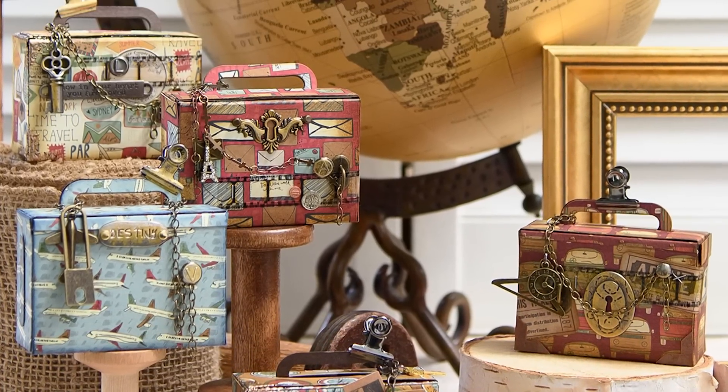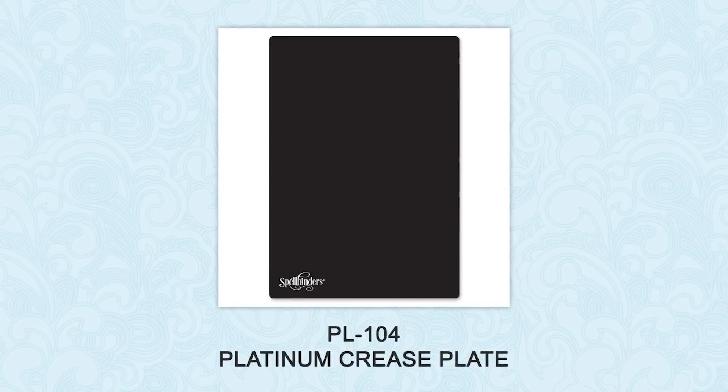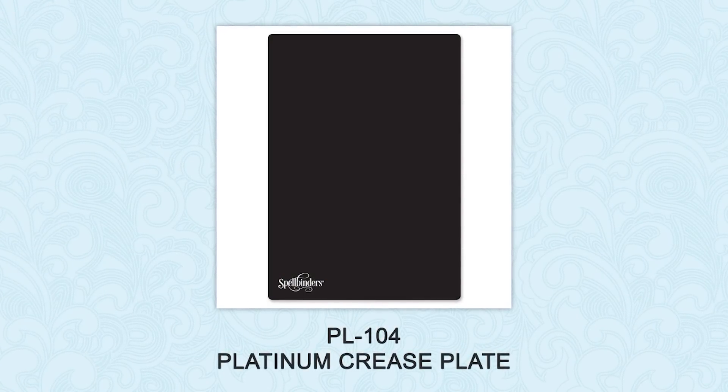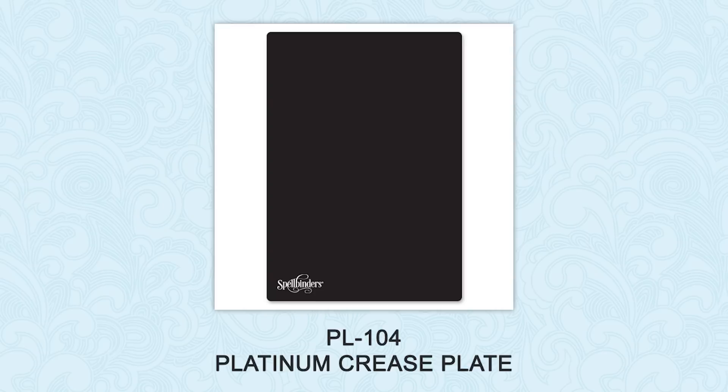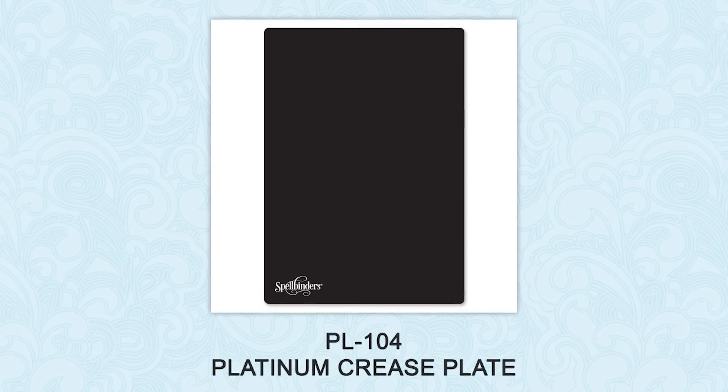When using Spellbinders Steel Roll Dies to create boxes, you want to make sure to use a special crease plate. Use it to help make score lines crisp in those contour steel roll dies that contain scoring features like box dies.